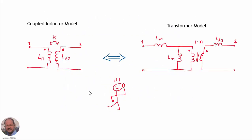The main objective in this presentation is to clarify once and for all the relationship between the Coupled Inductor Model and the Transformer Model. For the Coupled Inductor Model we have the self-inductances of each inductor and the coupling factor K — so we have three parameters to model our Coupled Inductor.